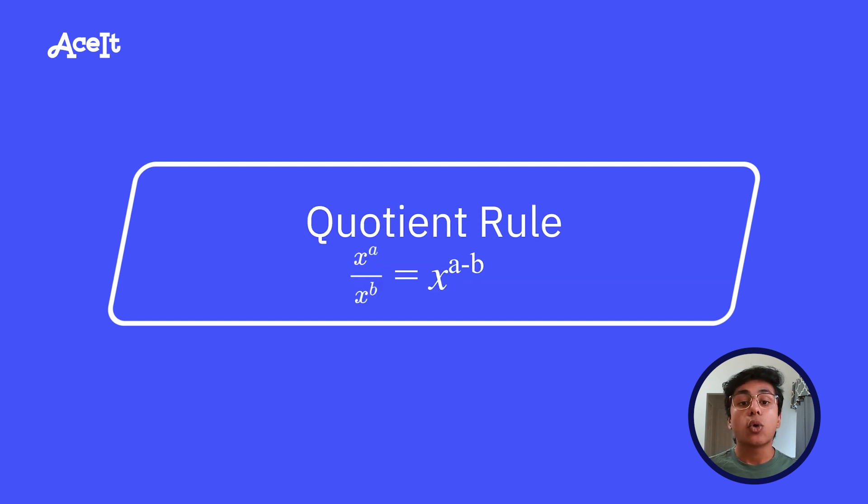The next rule we have is the quotient rule. This one's essentially just the opposite of the product rule. So if you have two numbers with the same bases being divided, you're going to subtract their exponents. So in this case, we have two to the third power over two squared. And three minus two is one, so we have two to the first power, or just two.